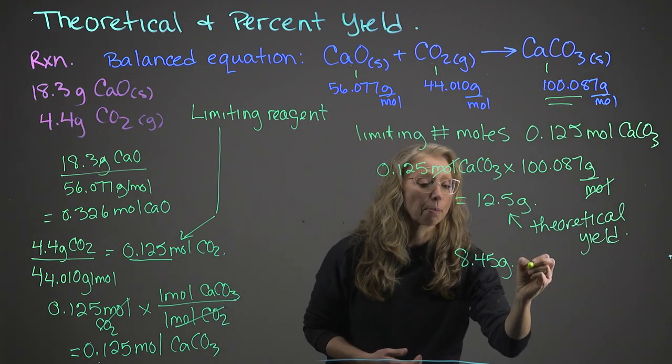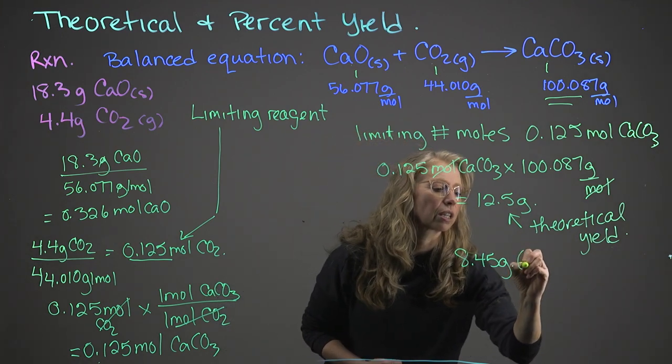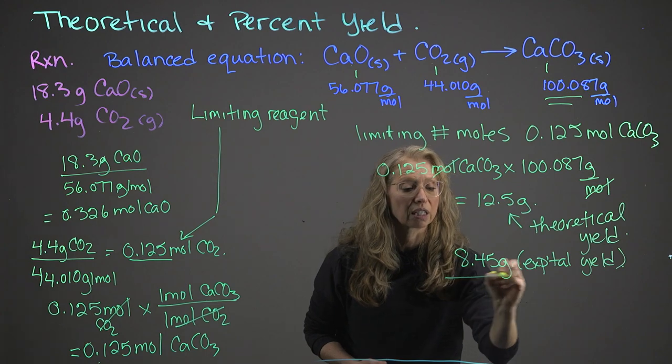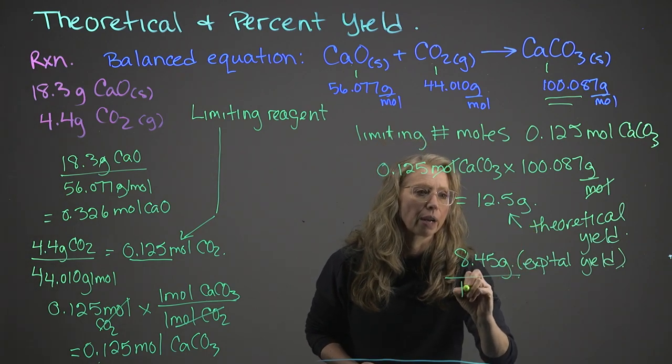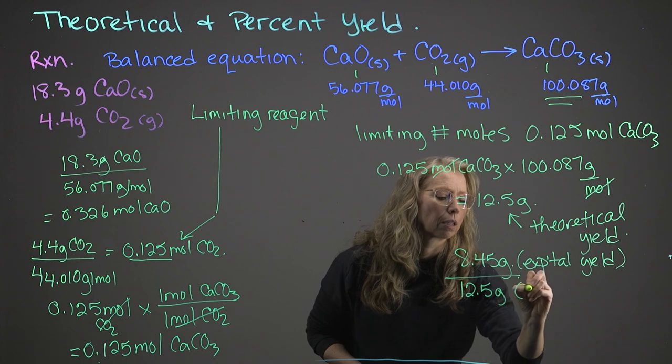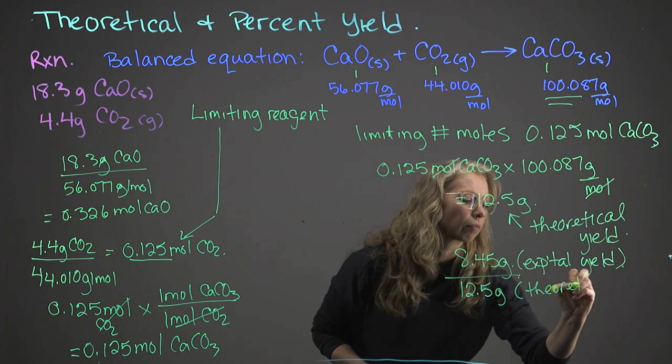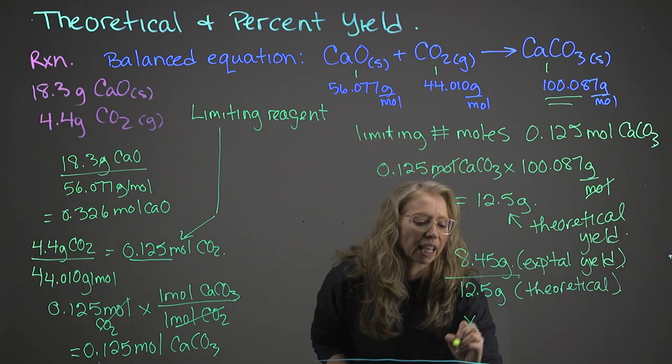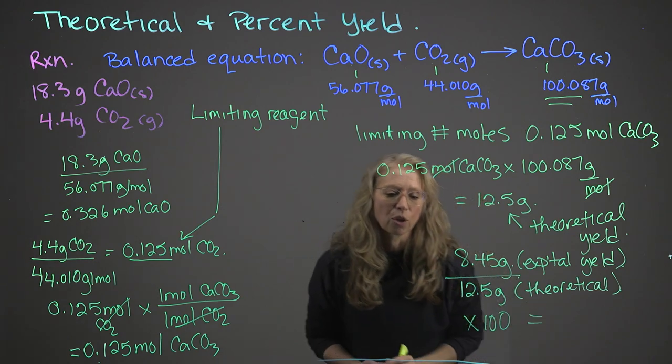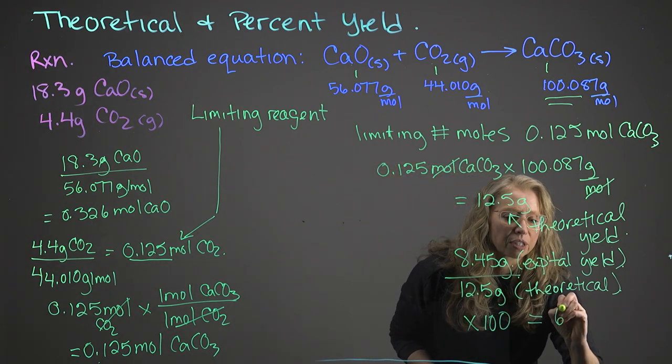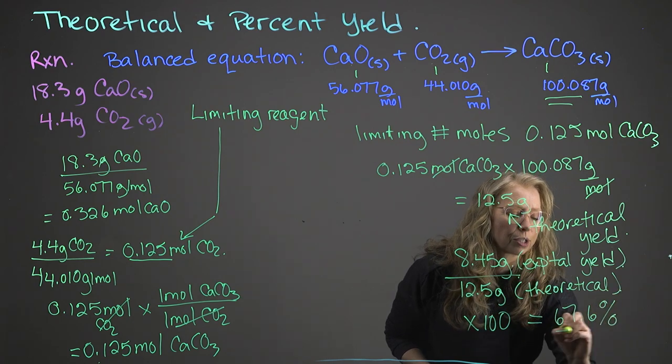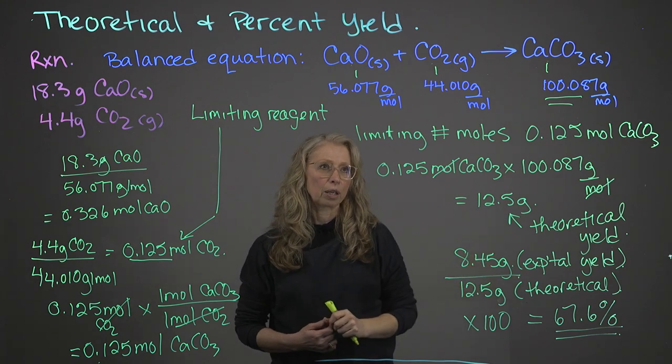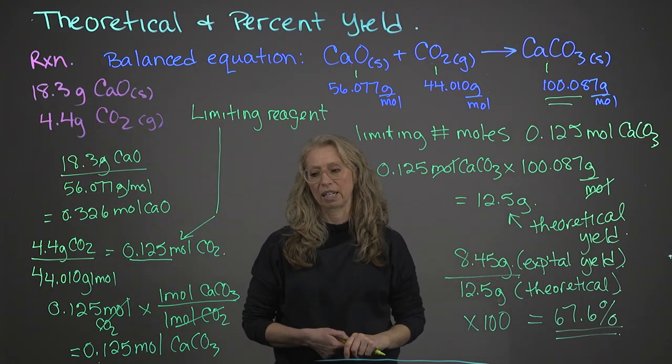So, we're going to take our experimental yield and we're going to divide it by our theoretical yield. And we need to multiply that by 100 to get a percent. And that is going to give us a value of 67.6%. So, our percent yield was 67.6%.